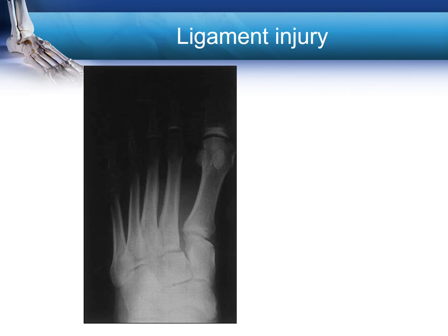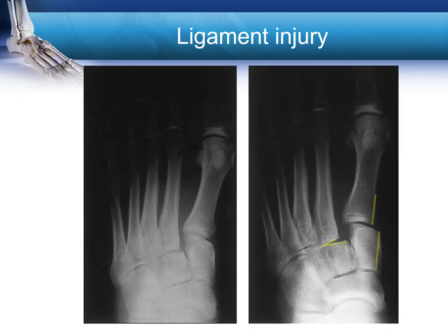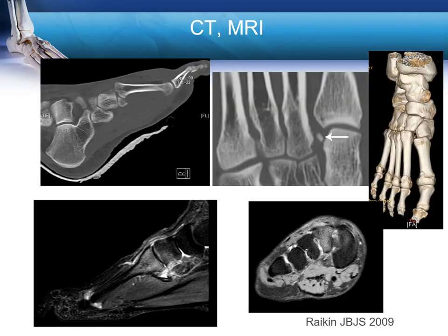In this case, not only is there widening of the second metatarsal relative to the medial cuneiform, but on stressing one can see that the first metatarsal is also unstable and has been carried laterally from the medial cuneiform, indicated by a break in the yellow line on the medial border of the foot.